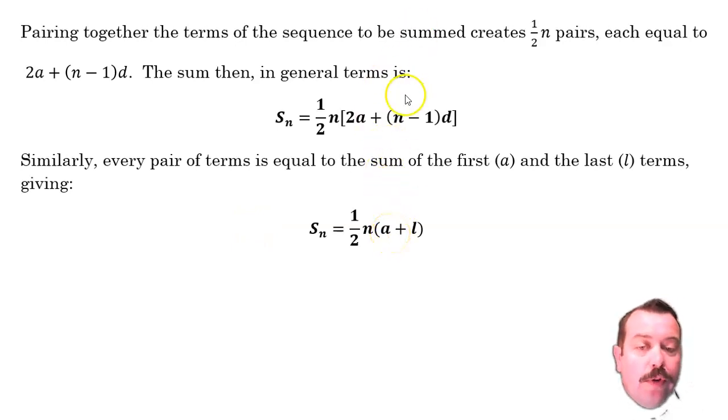Similarly, sometimes I won't have a and d, sometimes I will have a and l where l is the last term. So again we know that all of our pairs are the same, the first and the last, the second and the second last. So if I have the first and the last, I add them together, that's the same as the 2a plus n minus 1 d. We've just arrived at it differently.